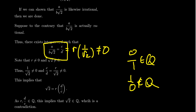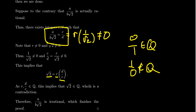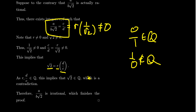Working the equation around, we get √2 = r × (d/c). Since r is rational and d/c is rational (the non-zero reciprocal of c/d), their product is rational — implying √2 is rational. But we know √2 is irrational, giving a contradiction. Therefore a/(b√2) is irrational, which finishes the proof.